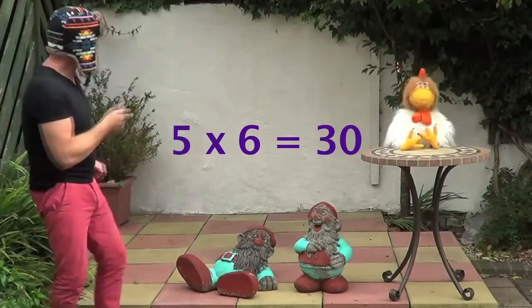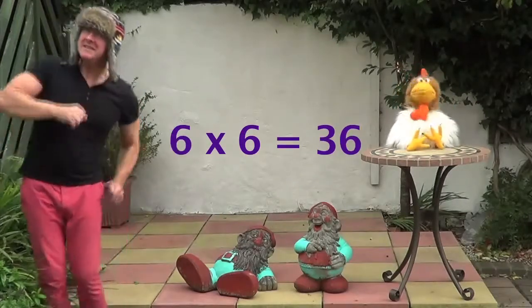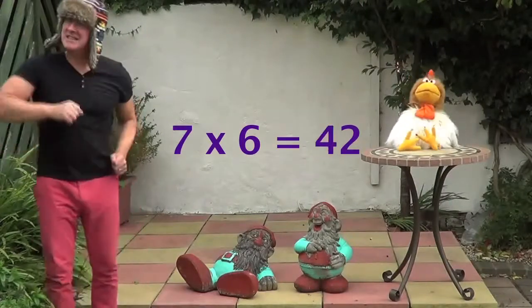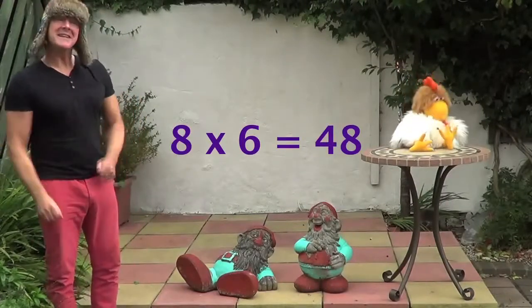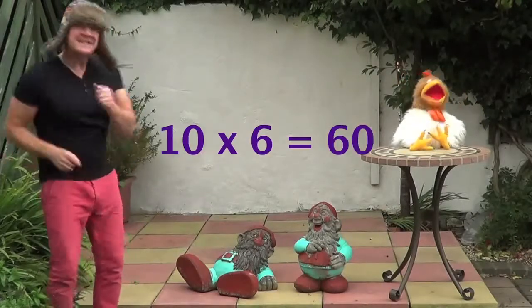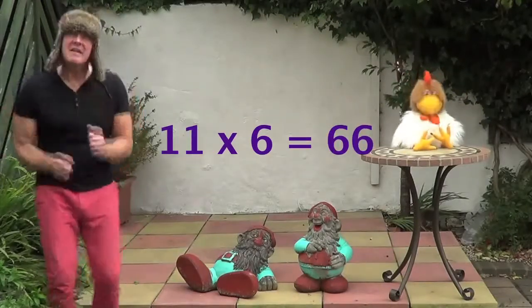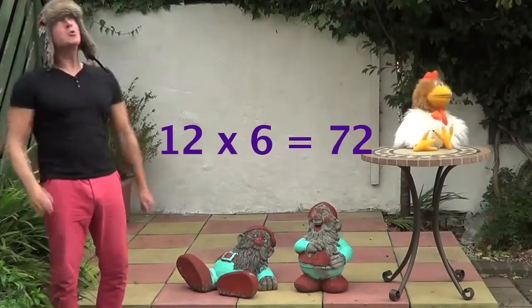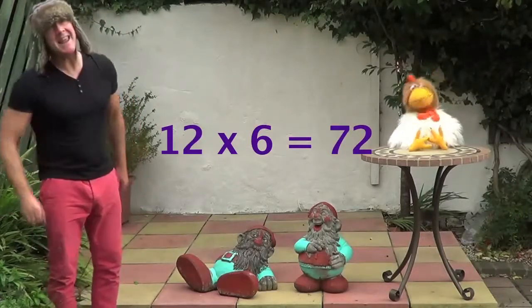5 times 6 is 30, 6 times 6 is 36, 7 times 6 is 42, 8 times 6 is 48, 9 times 6 is 54, 10 times 6 is 60, 11 times 6 is 66, 12 times 6 is 72.